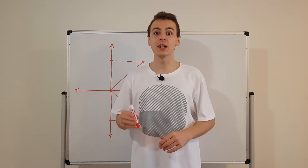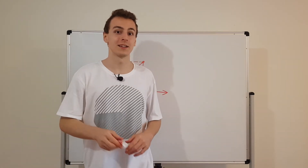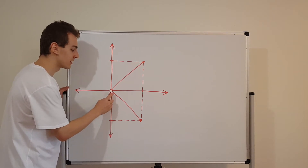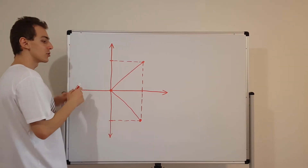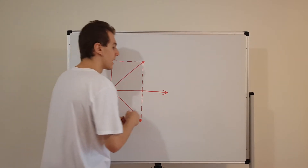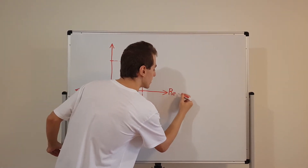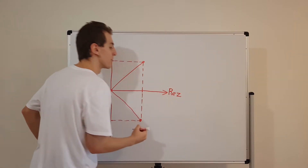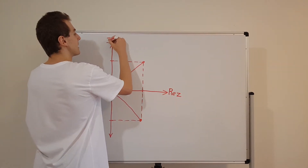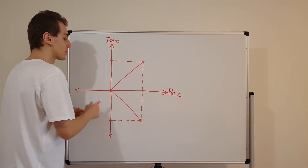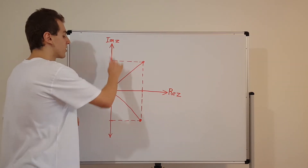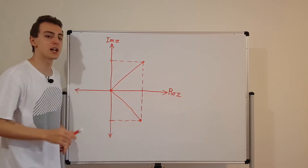Let's describe complex numbers using polar coordinates. I'm going to start off with a drawing of the complex plane. So over here we have the origin, and this is the horizontal and vertical axes. The horizontal axis I'm going to label as the real component of the complex number z, and this is going to be the imaginary component of z. So the horizontal axis corresponds to the real component, and the vertical axis corresponds to the imaginary component.